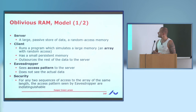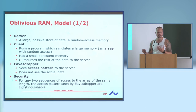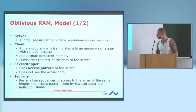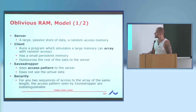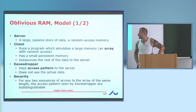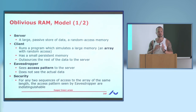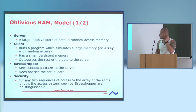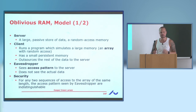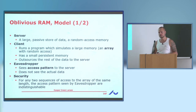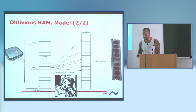Oblivious RAMs are general methods for taking any algorithm and hiding or encrypting the access pattern. For the rest of the talk we'll assume the server just sees the access pattern but not the contents of whatever you're storing in memory, because you can always encrypt that. The security measure is defined as follows: if you have any two sequences of operations on the ORAM that have the same number of operations, you should not be able to distinguish the two.